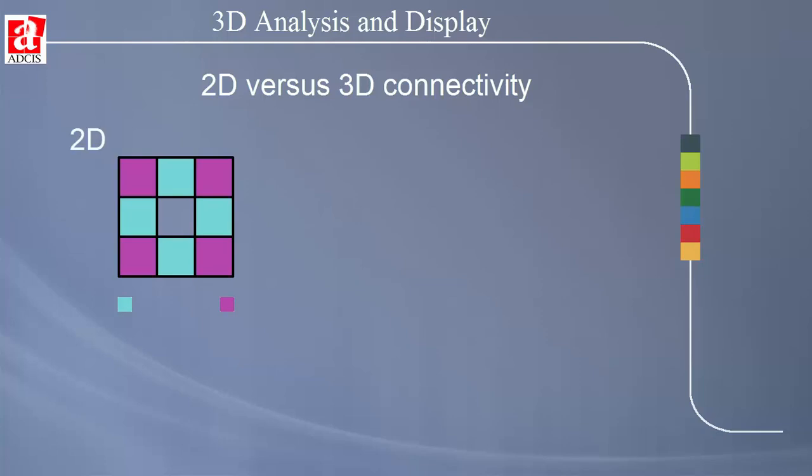In 2D images, pixels that share an edge are said to be connected. This is a connectivity of 4. If the pixels that share a corner are included, this adds 4 additional connections, giving rise to a connectivity of 8: 4 from edge sharing and 4 from corner sharing.